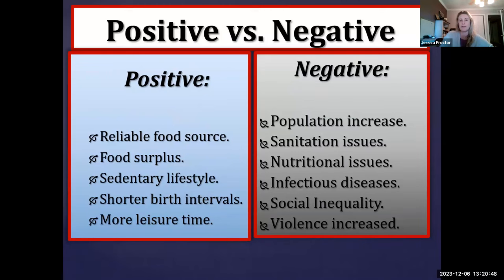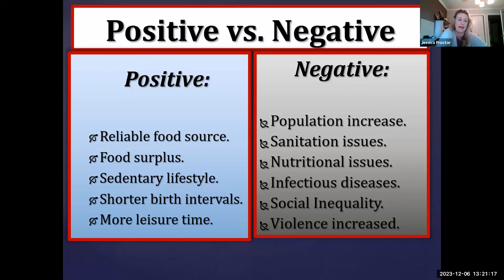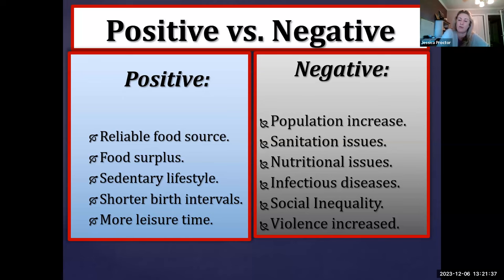We'll talk about the positive and negative consequences of this transition. The transition from hunting and gathering to agriculture allowed for a more reliable food source, especially once humans learned to cultivate and encourage the most advantageous characteristics in plants and animals. Early agriculturalists recognized that if they selectively bred desired features, that would yield more plentiful crops and more easily domesticated animals — even without modern hormones or antibiotics.